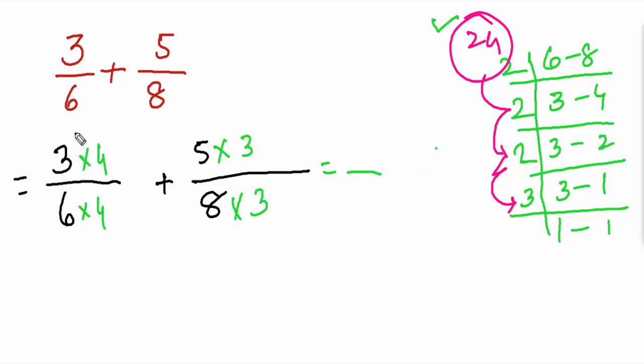3 times 4 is 12 over 24, plus 5 times 3 is 15 over 24. Just 24 over here, 12 plus 15, that is equal to 27 over 24.